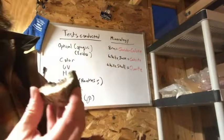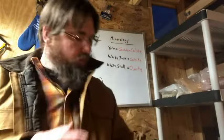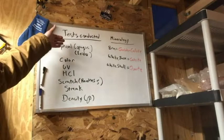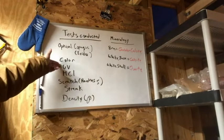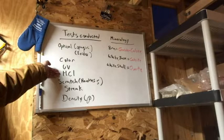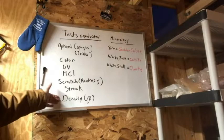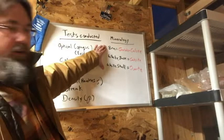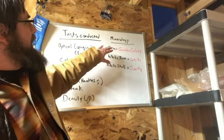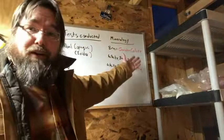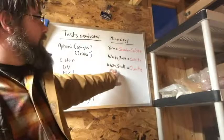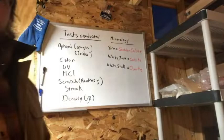In a nutshell — we conducted: optical tests (iridescence and opacity), color, long-wave UV fluorescence, cold dilute hydrochloric acid, scratch hardness test, streak test, and density test. Our brown mineral is golden calcite — brown calcite is often referred to as brown or golden calcite. The white base is granular calcite. And the white shell is microcrystalline quartz with a slight gray tint. If you have any questions or comments, please leave them below — I hope you learned something.